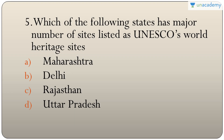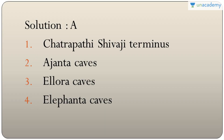Question five: which state has the most sites listed as UNESCO World Heritage Sites? The answer is Maharashtra, with four sites — Chhatrapati Shivaji Terminus, Ajanta caves, Ellora caves, and Elephanta caves.